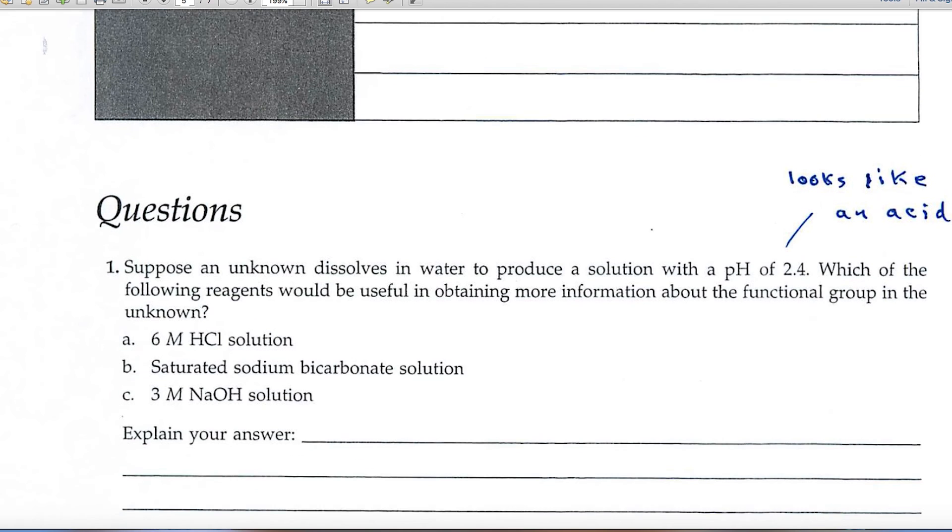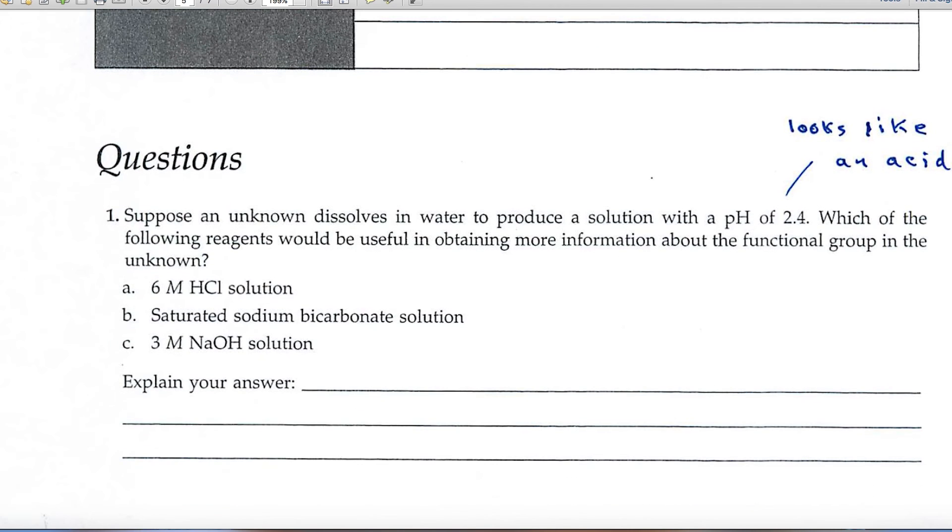Now let's look at the questions at the end of the experiment. Number one describes a situation in which we have a pH of 2.4. Well, to me, that suggests that we've got a carboxylic acid because it's significantly below what distilled water would be.